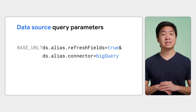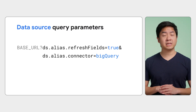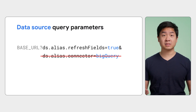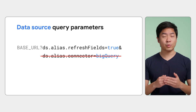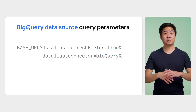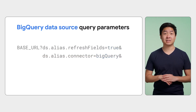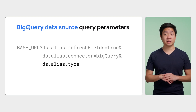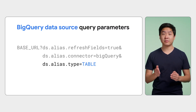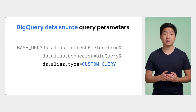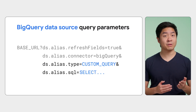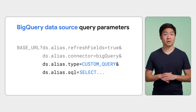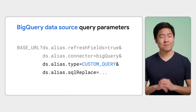Let's dive into a few specific data source query parameters for the BigQuery data source. With the type parameter, you can configure the BigQuery data source to either pull data from a BigQuery table using the 'table' value, or pull data from a SQL query using the 'custom query' value. You can use the SQL parameter to define the query the Looker Studio connector will use to pull data and fields. Or you can use the sqlReplace parameter to selectively update the template data source's original query. There are many possibilities with just the BigQuery parameters.